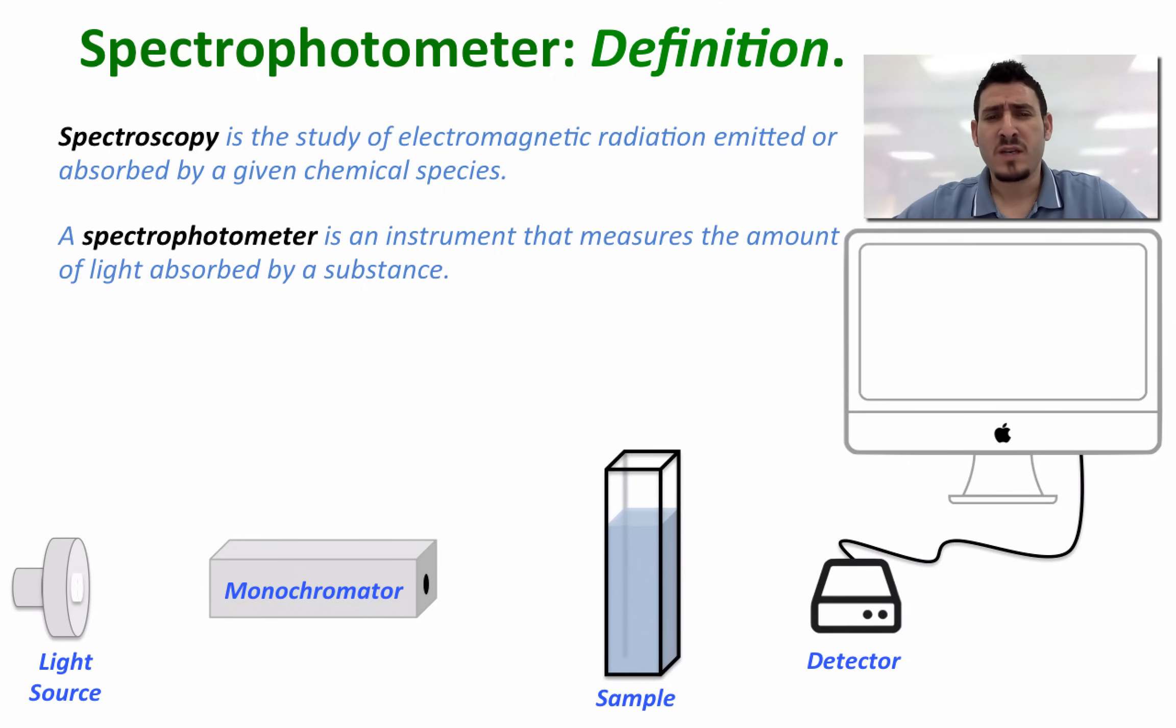The spectrophotometer is made from a light source, a monochromator, a cuvette that's going to contain the sample, and a detector that's connected to a computer that will analyze the data.